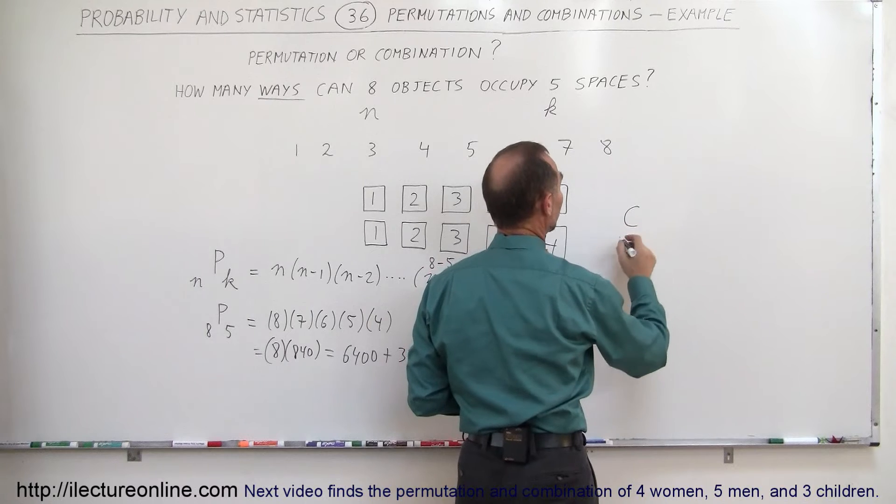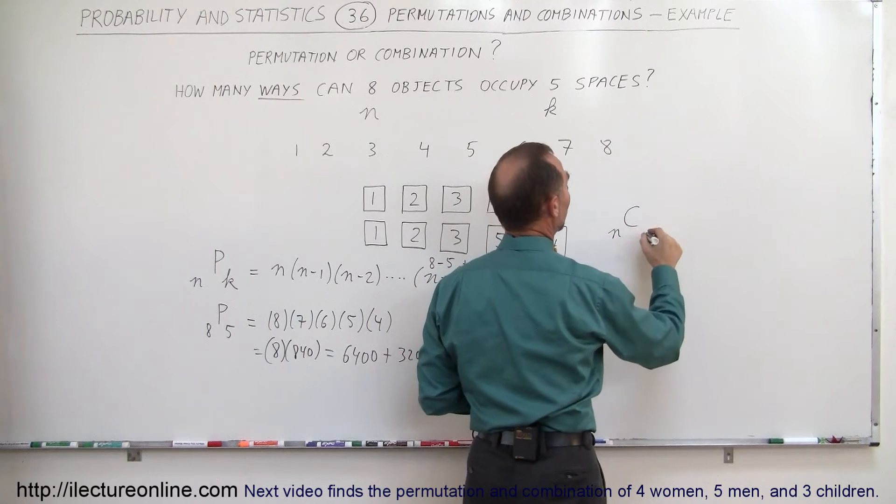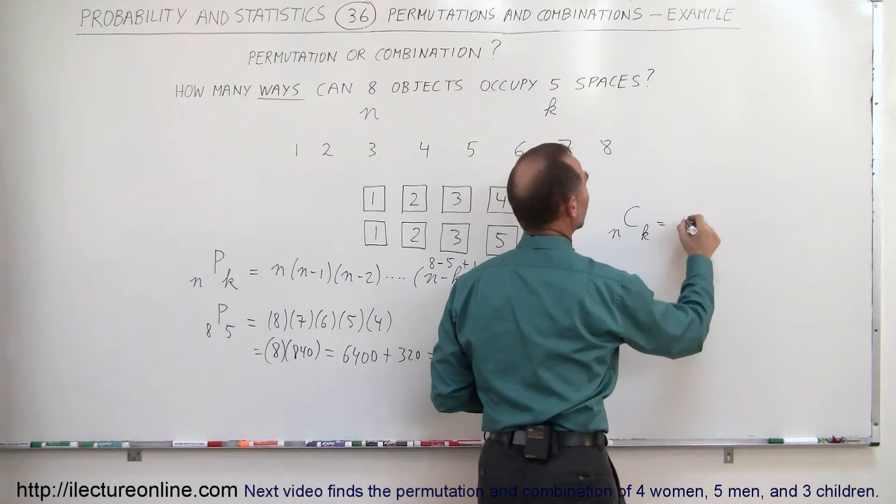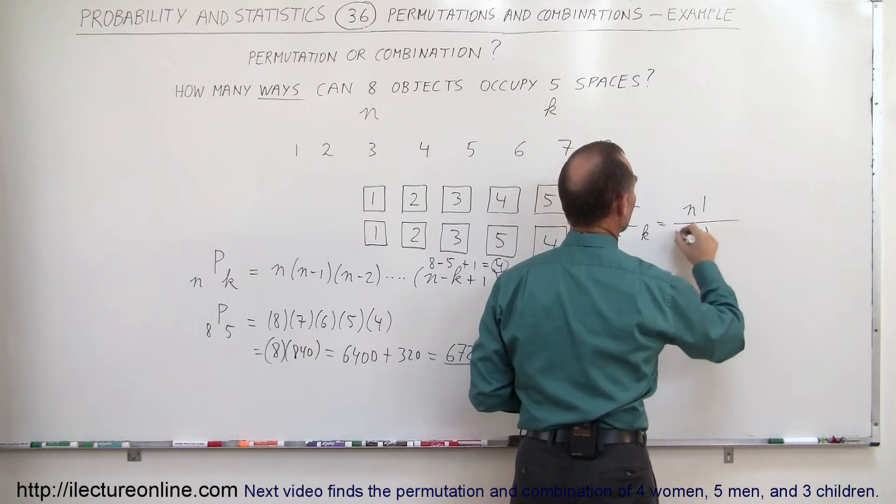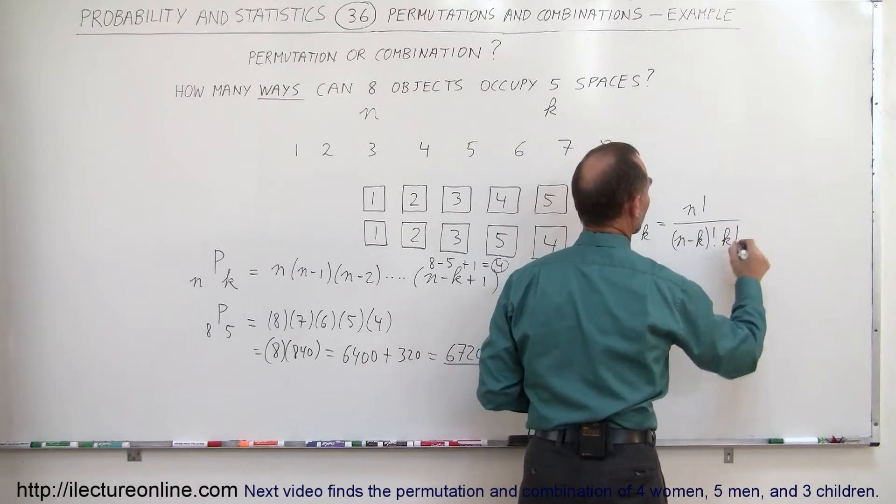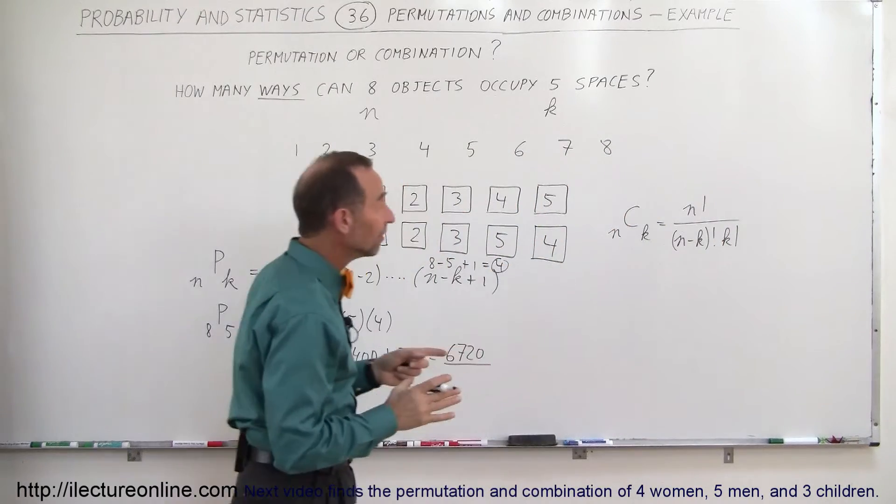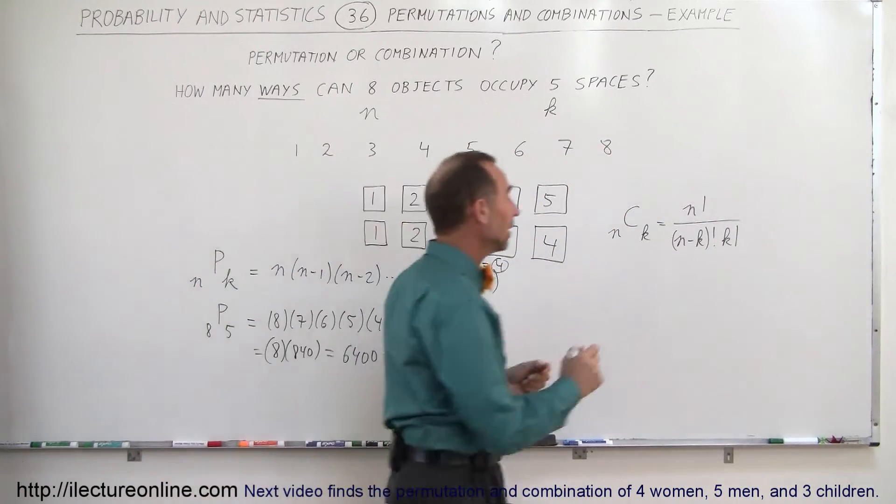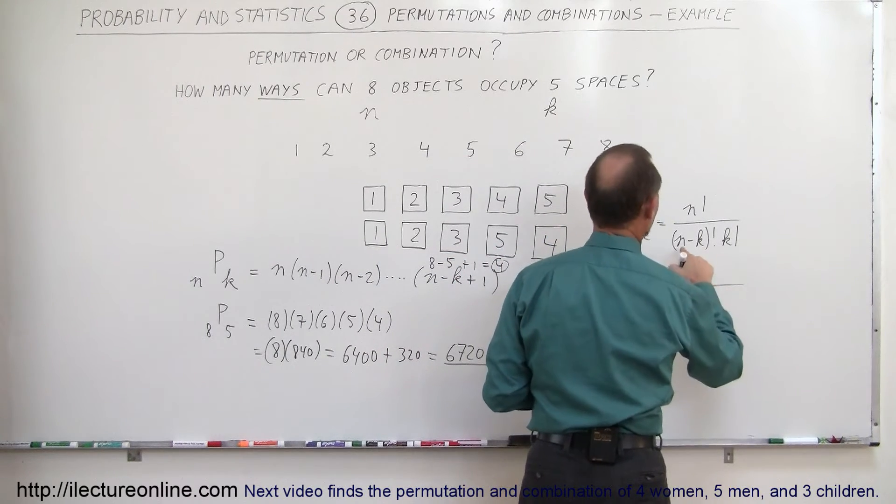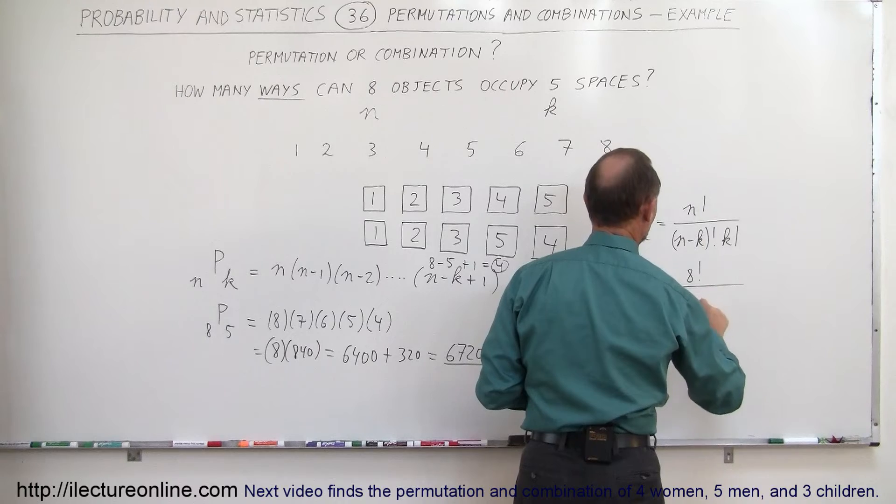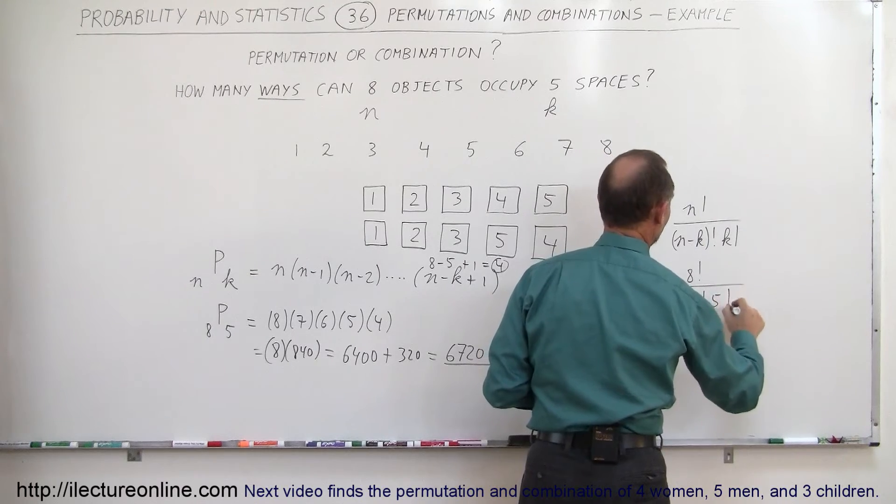The number of combinations, if we have n numbers and we have k spaces, this is equal to n factorial divided by n minus k quantity factorial times k factorial. In the case where n is 8 and k is 5, let's see what we get. This is equal to 8 factorial divided by 8 minus 5 factorial times 5 factorial.